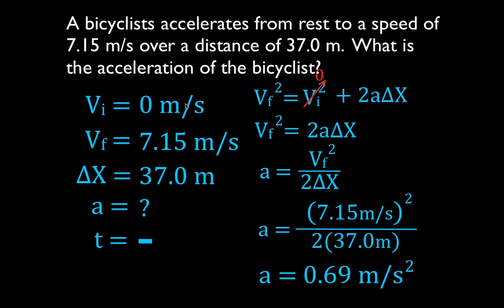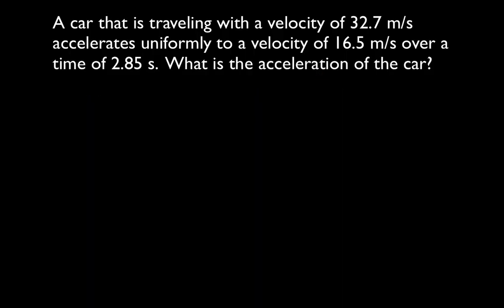That is example number one. Our second example of solving for acceleration: a car is traveling with a velocity of 32.7 meters per second. It accelerates uniformly to a velocity of 16.5 — you'll notice it's slowing down. A change in velocity is still called acceleration, but you should notice that it's slowing down. That occurs over a time of 2.85 seconds, and we would like to know what is the acceleration.